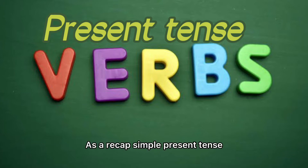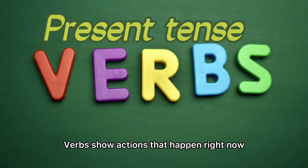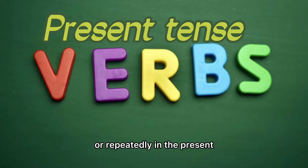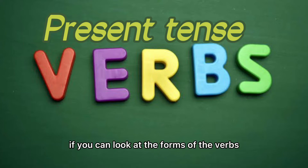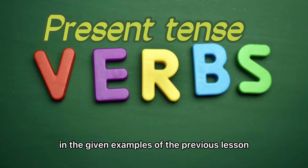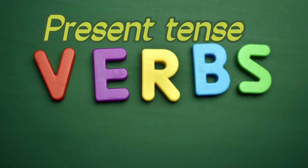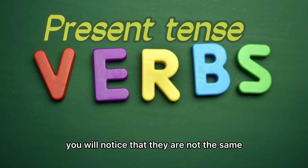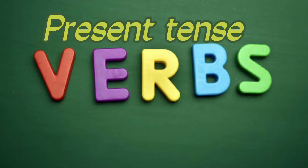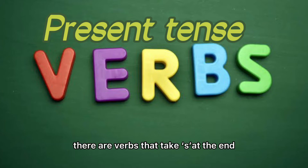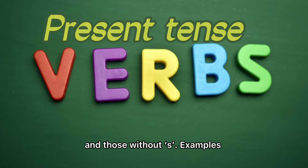As a recap, simple present tense verbs show actions that happen right now or repeatedly in the present. If you look at the forms of the verbs in the given examples of the previous lesson, you will notice that they are not the same. There are verbs that take S at the end and those without S.